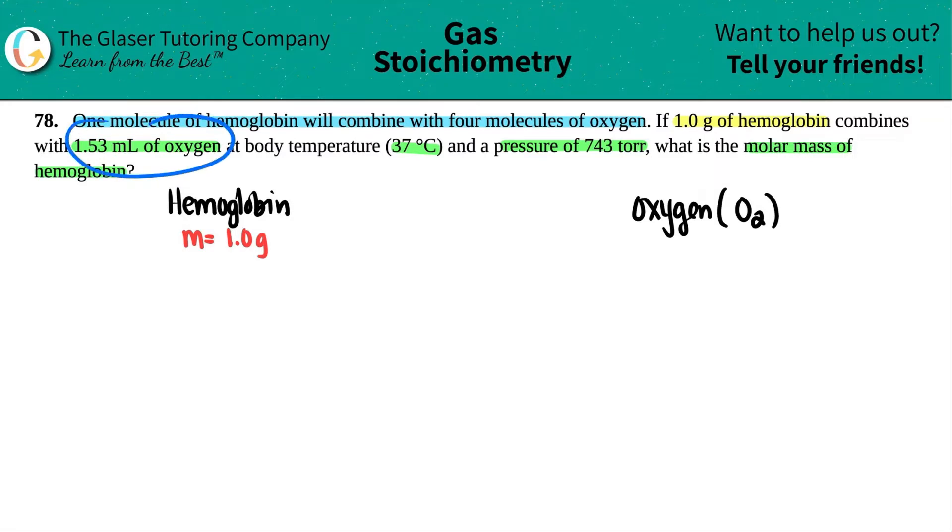And now they're giving me information about the oxygen. They told me that I have a volume of oxygen, so V equals 1.53 milliliters. Now they have this volume of oxygen at a certain temperature, so they go together. So with this volume of oxygen, it's at a temperature of 37 degrees Celsius and a pressure of 743 torr.